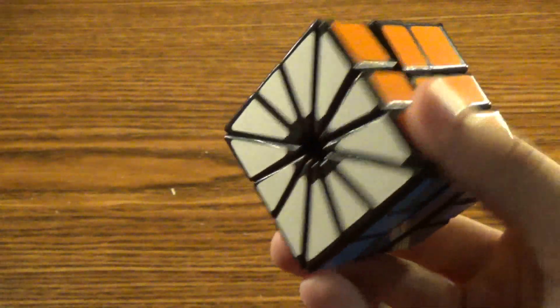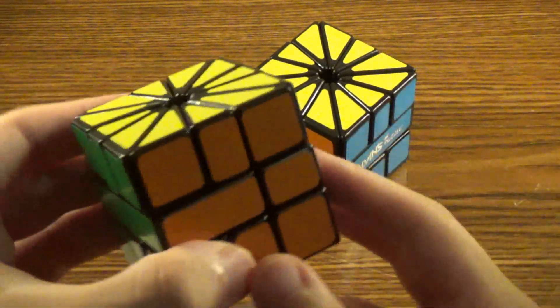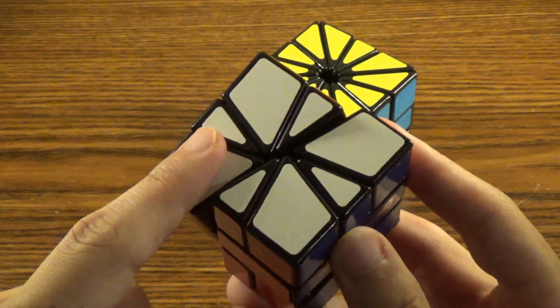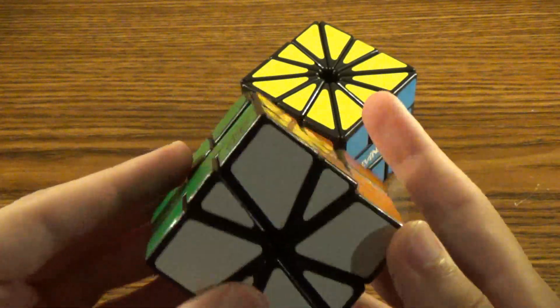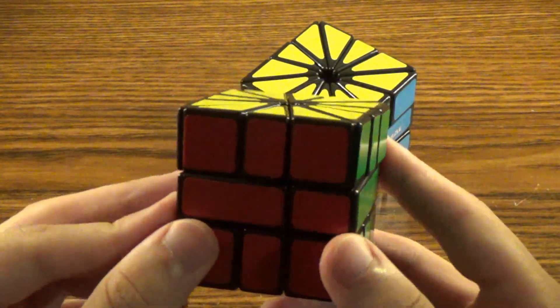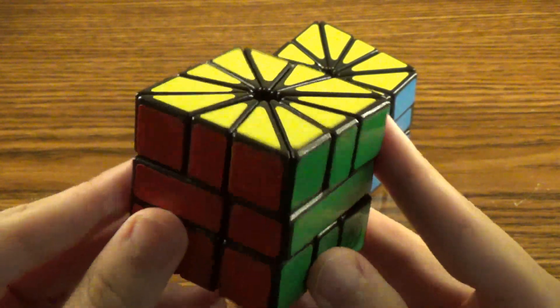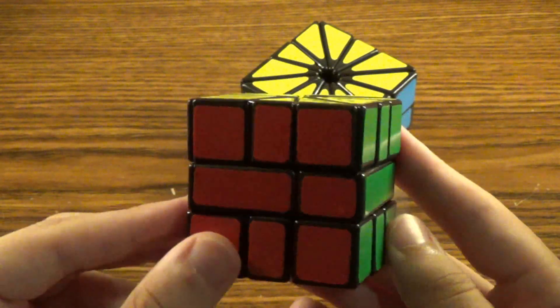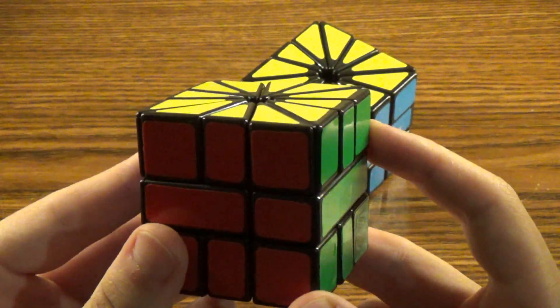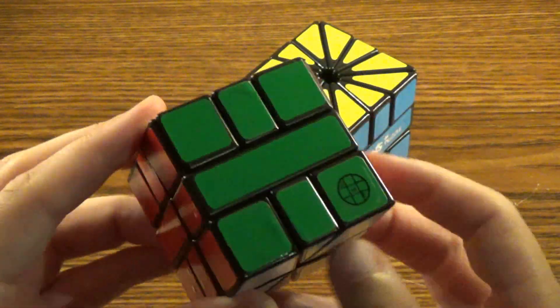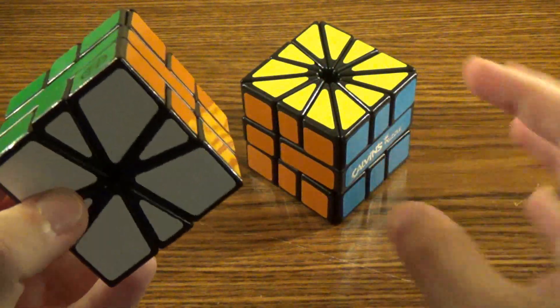But on the Square-3 Plus, if you try and use a Square-2 algorithm, sometimes these bandaged corners will actually block your algorithm, which is a little bit off-putting. It didn't happen to me on this solve, but I have solved this three or four times, and on at least two of those, that actually happened to me. So it is a nice little added challenge to just the Square-2.